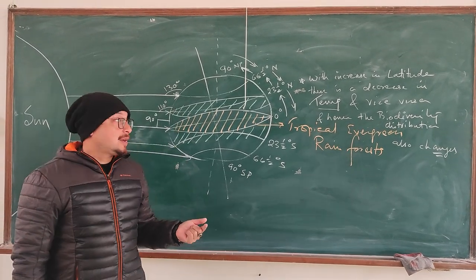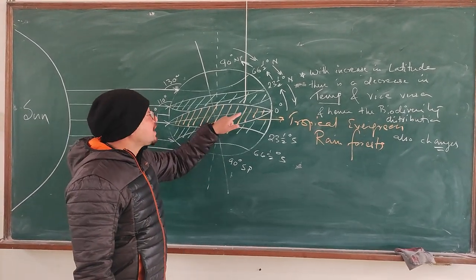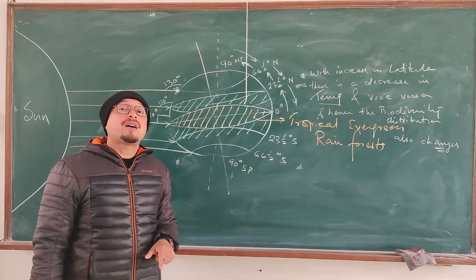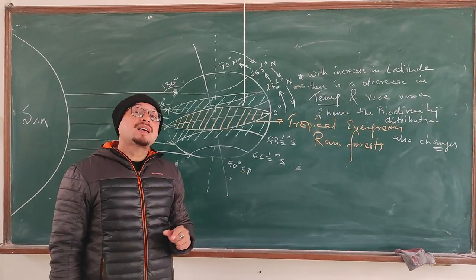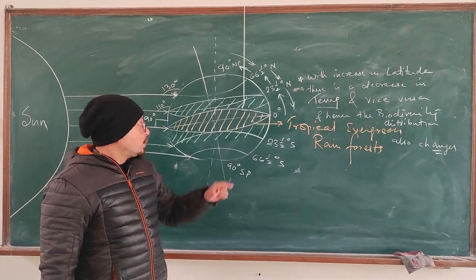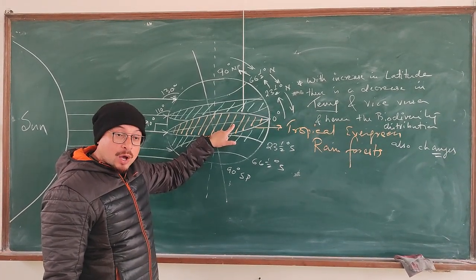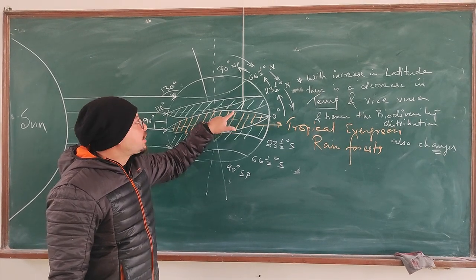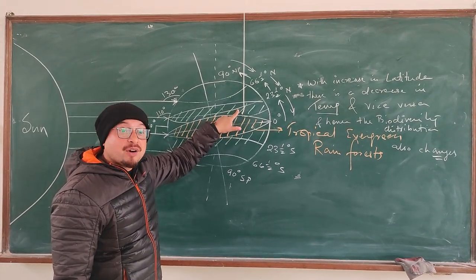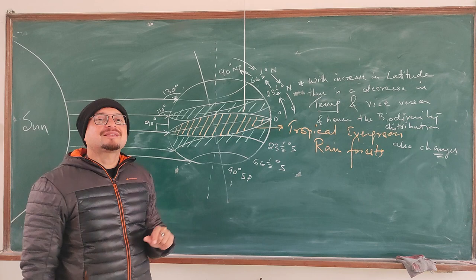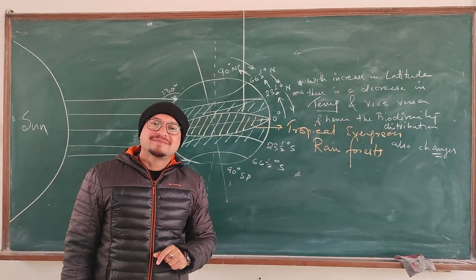So why tropical? Because it is still lying between the 0 degree and 23.5 degree north and 23.5 degree south. So the center is a tropical evergreen rainforest which is sandwiched between tropical deciduous forest on top and below.